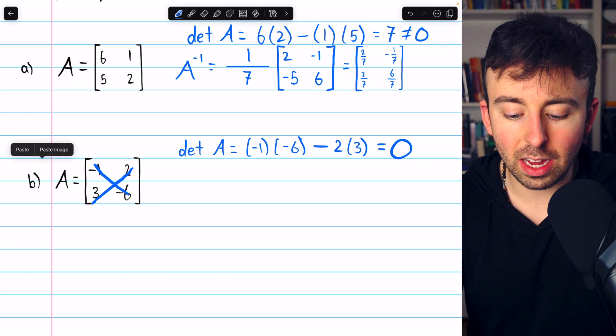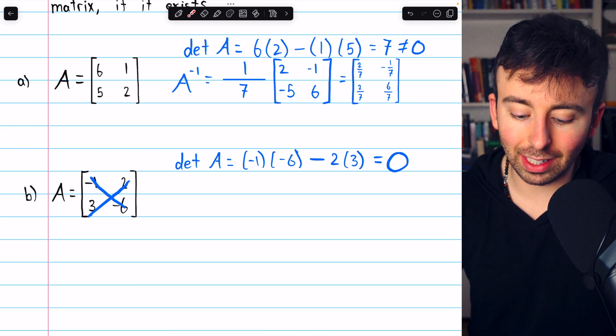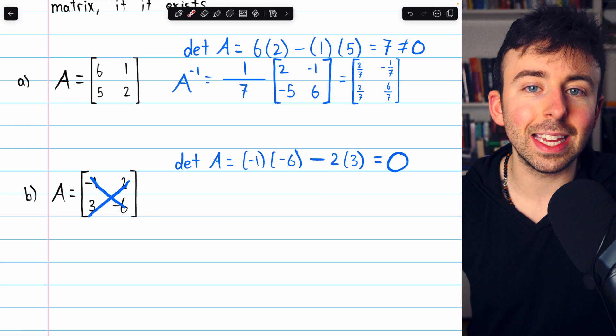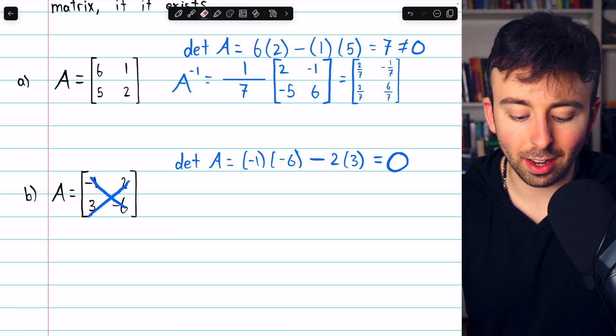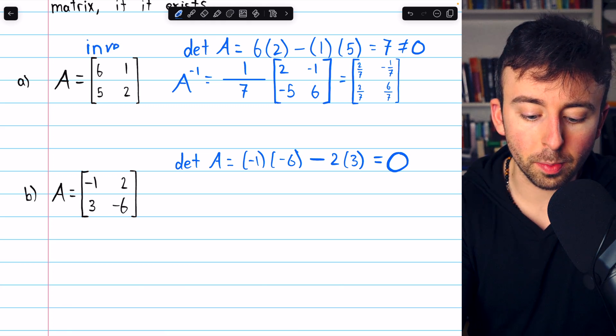As you can see, when we construct the inverse, we have to divide by the determinant. So certainly if the determinant is 0, A inverse cannot possibly exist. This matrix is non-invertible.